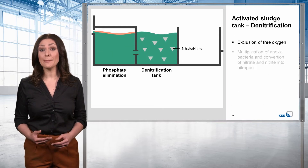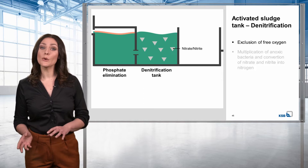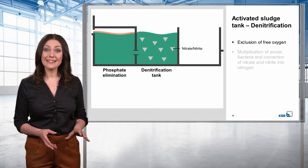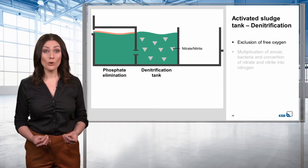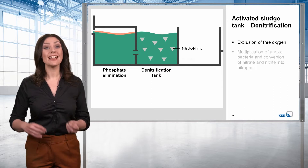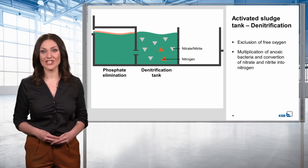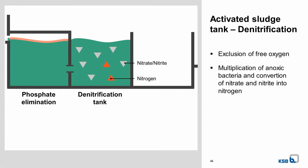When the phosphate has been eliminated in the first stage, the water flows into the so-called denitrification tank. Here, it is the anoxic bacteria that enjoy optimum life conditions. With free oxygen being excluded, anoxic bacteria thrive and multiply, and they biologically convert nitrate and nitrite into nitrogen.